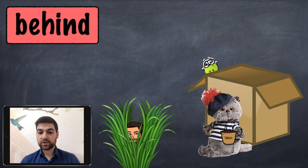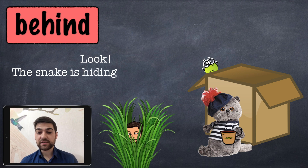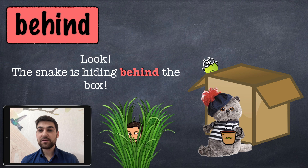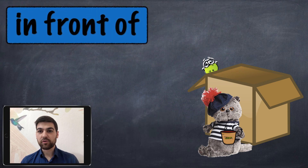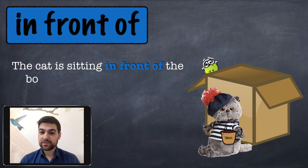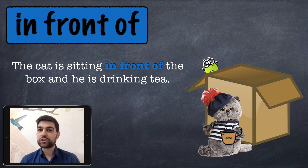Next, 'behind.' In the picture there is a box, a cat, and a snake. The snake is hiding behind the box. And 'in front of' — the cat is sitting in front of the box and he is drinking tea.